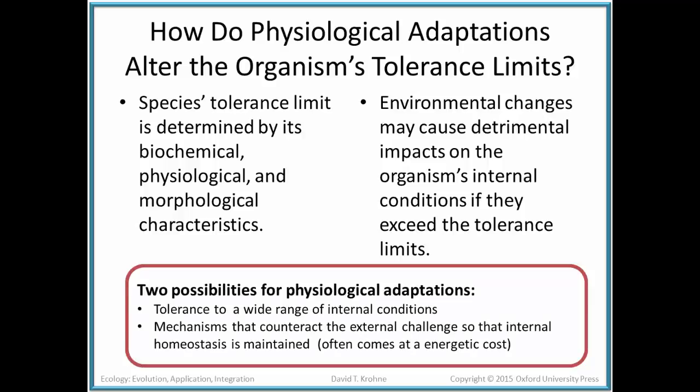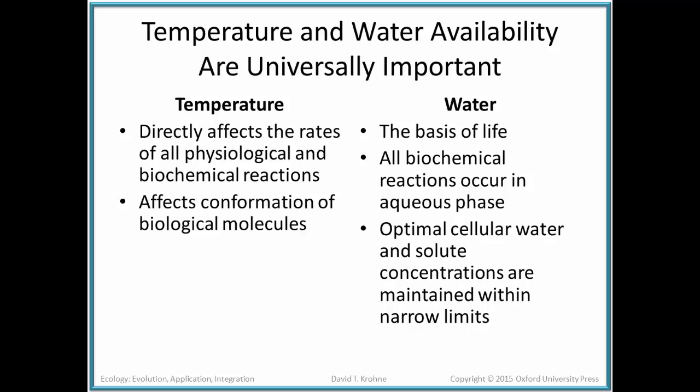There are two possibilities for physiological adaptations: you can tolerate a wide range of internal conditions — sort of go with the flow — or develop mechanisms to counteract the external challenge so that internal homeostasis is maintained, which is often very energetically costly. Two physical characteristics that are very important in this respect are temperature, because it directly affects the rates of all physiological and biological reactions and can change the conformation of biological molecules, and water, because it's the universal solvent required at both the cellular and organismic level for life itself.